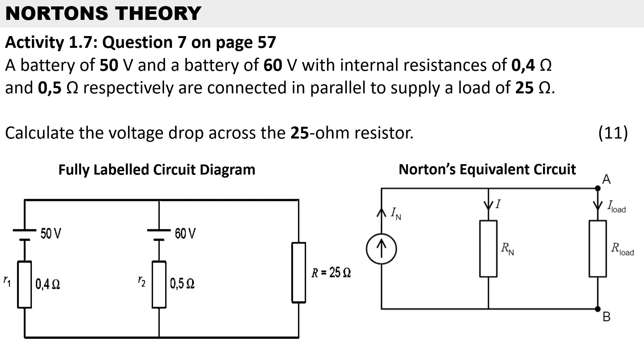We need to calculate the voltage drop across the 25 ohm resistor for 11 marks. You can see on the left hand side I've drawn the fully labeled circuit diagram showing our 50 volt battery and our 60 volt battery with internal resistances of 0.4 ohms and 0.5 ohms connected in parallel to a load resistor of 25 ohms.